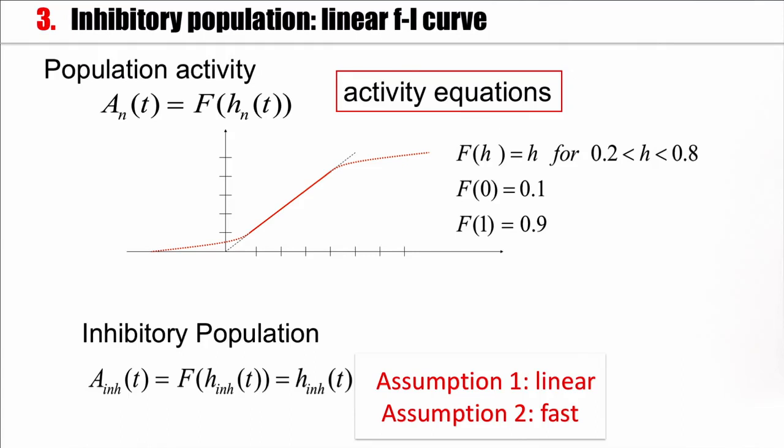Now in order to proceed with the analysis of these equations, I make two assumptions. The first one is that this activity function for the inhibitory population is just linear. So I just take a linear line here instead of this full bended curve. This assumption would be valid in some limited regime.